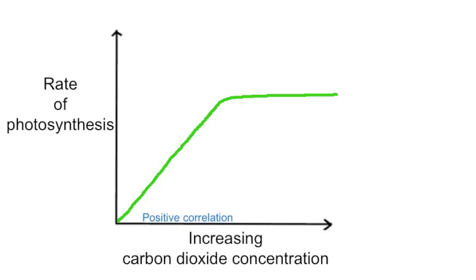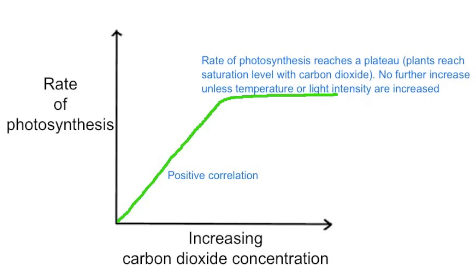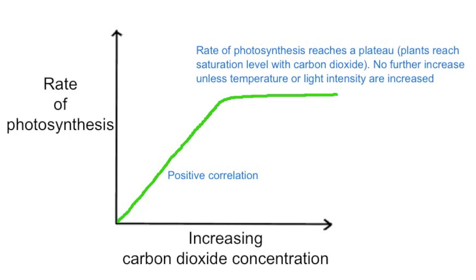At the point of reaching the plateau, the plants are saturated with carbon dioxide and no further increase in the rate of photosynthesis can be achieved unless you increase light intensity or temperature.